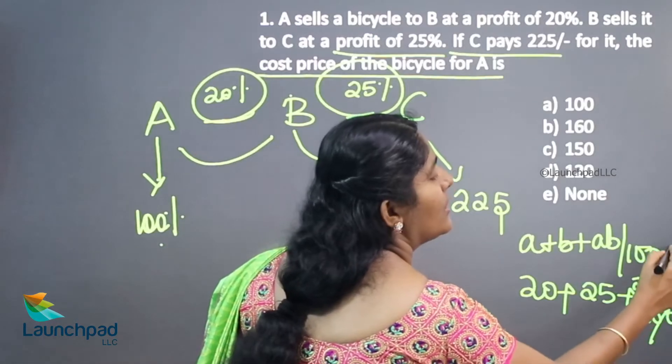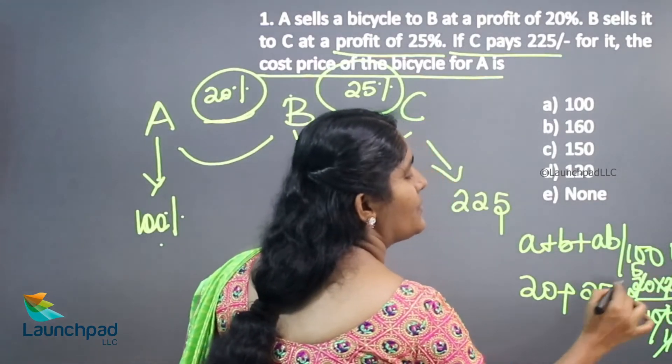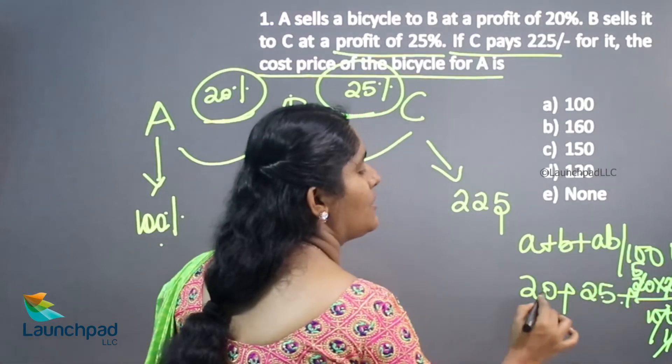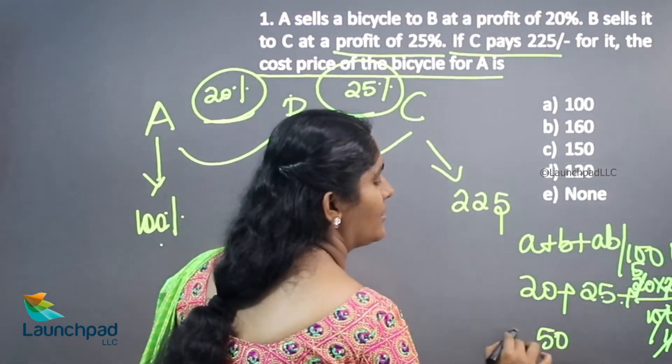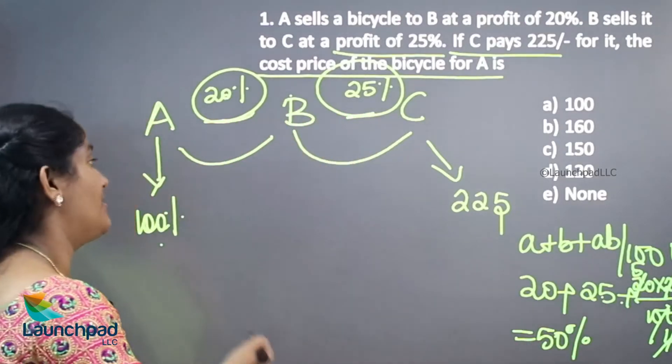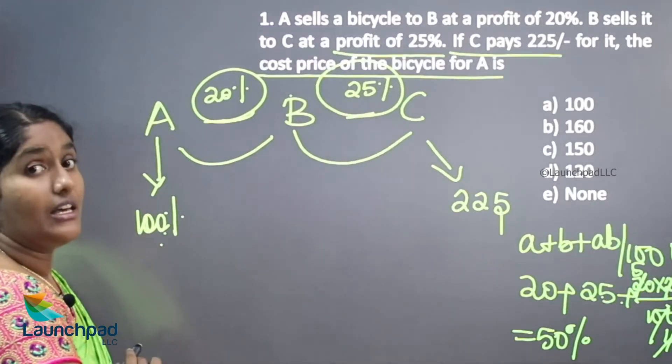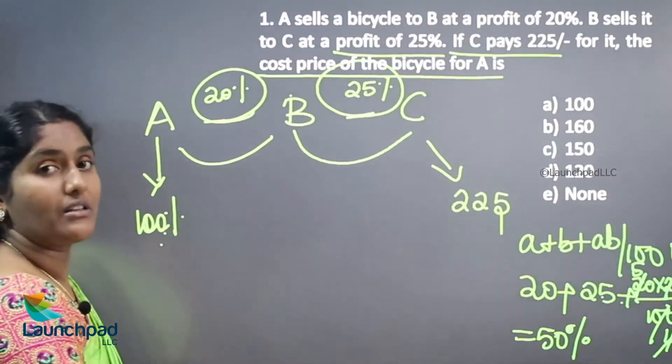So this is 1 time, this is 4 times and this is 5 times. 25 plus 5 is 30, 30 plus 20 is 50. So 50% is increased. The initial value 100% is increased by 50%. So C pays 150%.